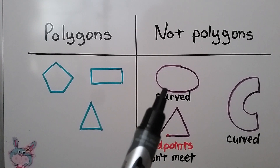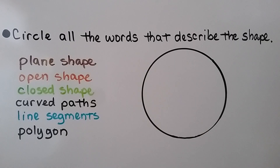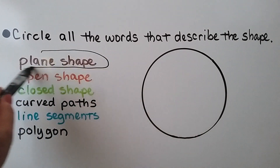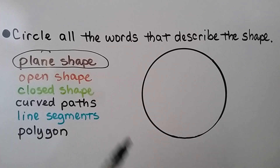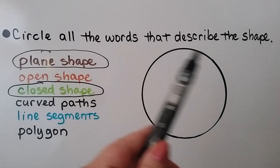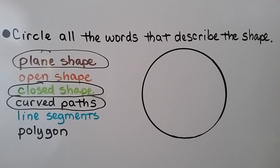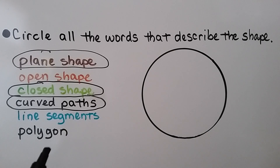A polygon can't have a curved line, and the endpoints must meet so it's closed. Let's circle all words that describe this circle. Is it a plane shape? Yes — circle 'plane shape.' Is it an open shape? No, it's closed — circle 'closed shape.' Is there a curved path? Yes. Are there line segments? No. Is it a polygon? No — a polygon can't have curved paths.